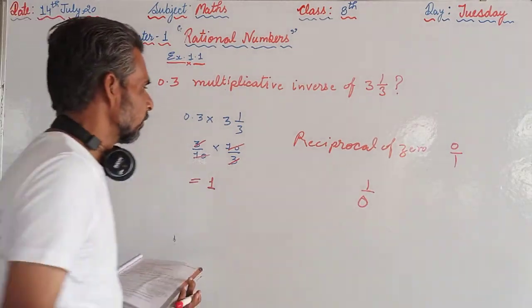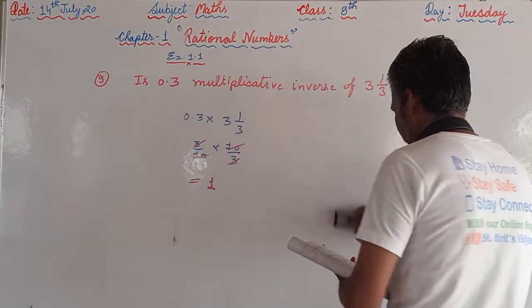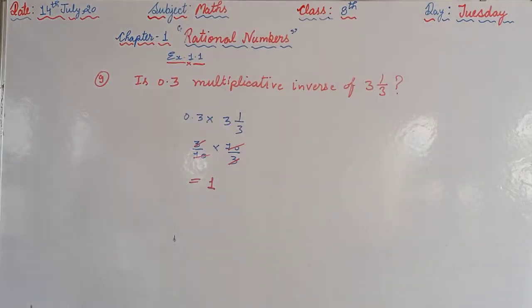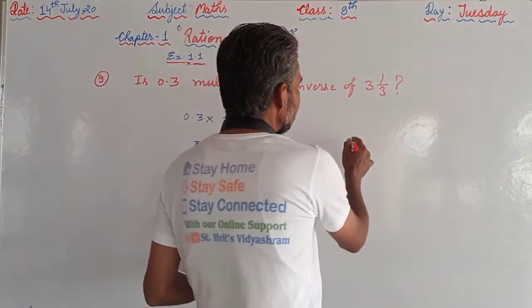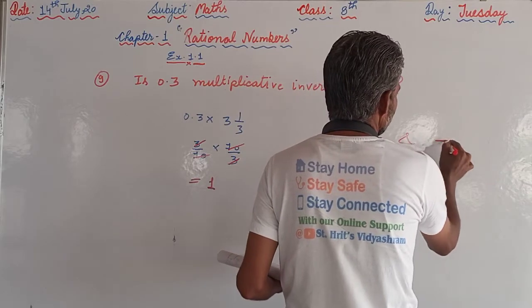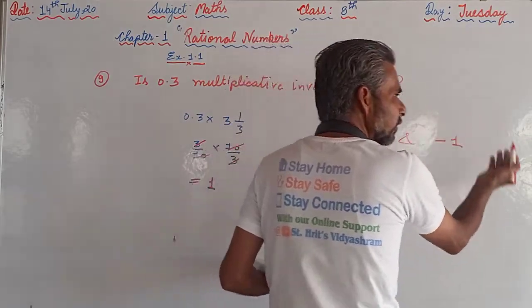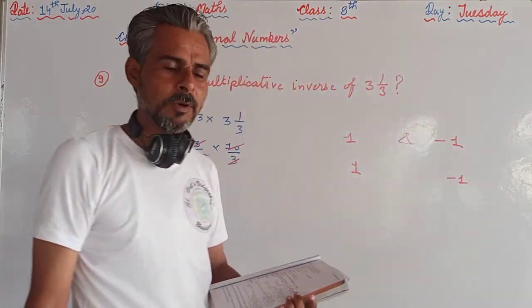So second part is, we are discussing question number 10. Second part is: the rational numbers that are equal to their reciprocals, and these are 1 and minus 1. The reciprocal of 1 is 1. The reciprocal of minus 1 is minus 1.